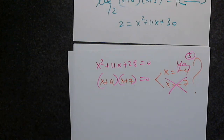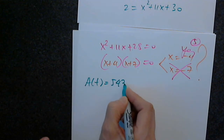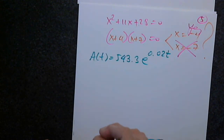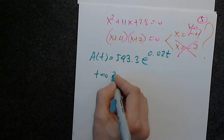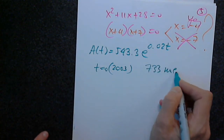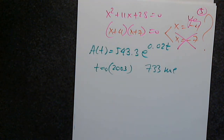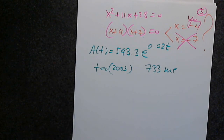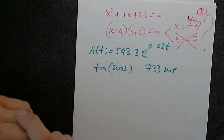Problem 13: exponential growth model. A of t equals 543.3 times e to the 0.02t, where t equals 0 means year 2003. We're asked to determine when the population will be 733 million. When you need to compute a log with a base other than 10 or e on a calculator, you use the change of base formula: log base 7 of 3 equals natural log 3 over natural log 7, or log 3 over log 7.